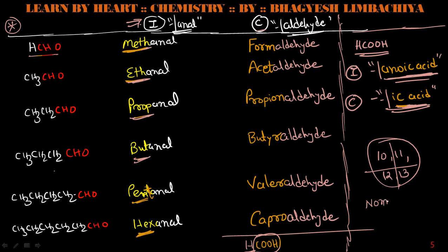Every organic chapter starts from nomenclature. For Chapter 12 nomenclature, you need to know the nomenclature from Chapters 10, 11, and 13 as well — only then can you understand Chapter 12. Also, the chemical reactions in Chapter 12 will combine reactions from Chapters 10 and 11 together.